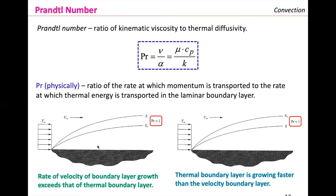When we have a Prandtl number bigger than one, the rate of velocity boundary layer growth exceeds that of the thermal boundary layer. What if we have Prandtl numbers less than one? In that case, the thermal boundary layer is growing faster than the velocity boundary layer. So the Prandtl number helps us compare those two phenomena — the thermal boundary layer versus the velocity boundary layer.